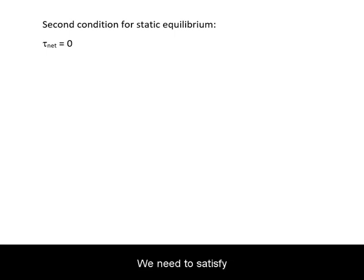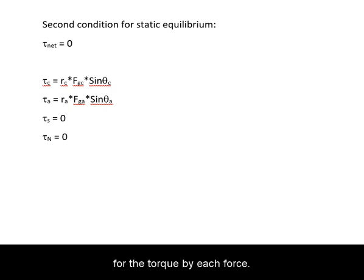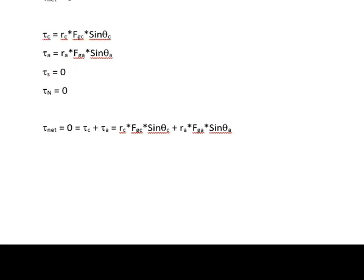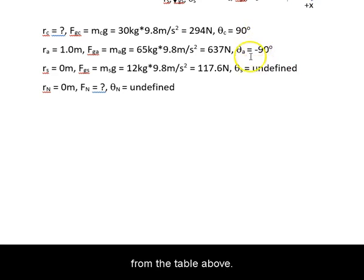We need to satisfy the second condition for static equilibrium. The net torque around our pivot point must be zero. We write out expressions for the torque by each force. Note that the torque by the seesaw's weight and the normal force are both zero. We write out the expression for net torque. Remember that torque direction is already included in the angles from the table above.